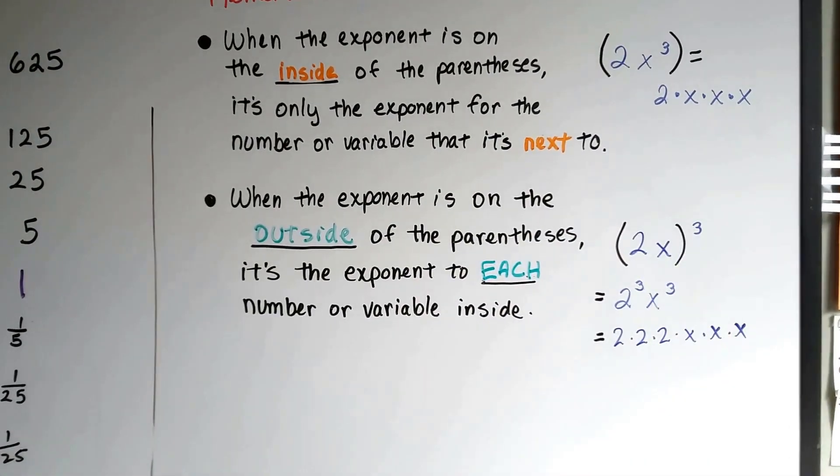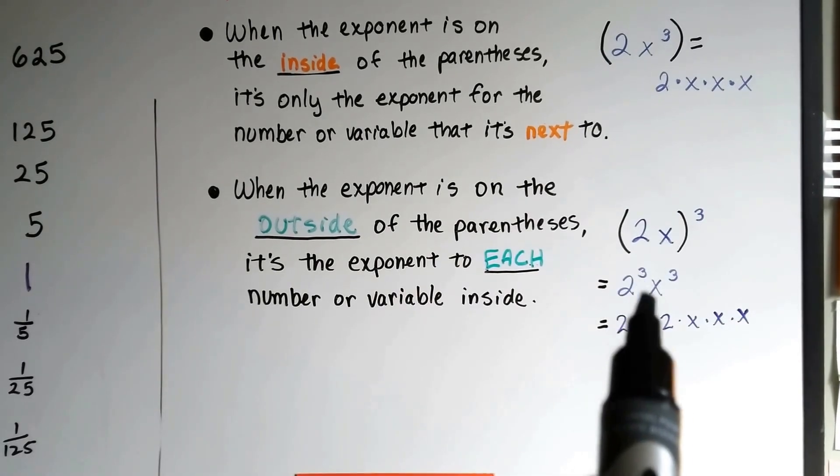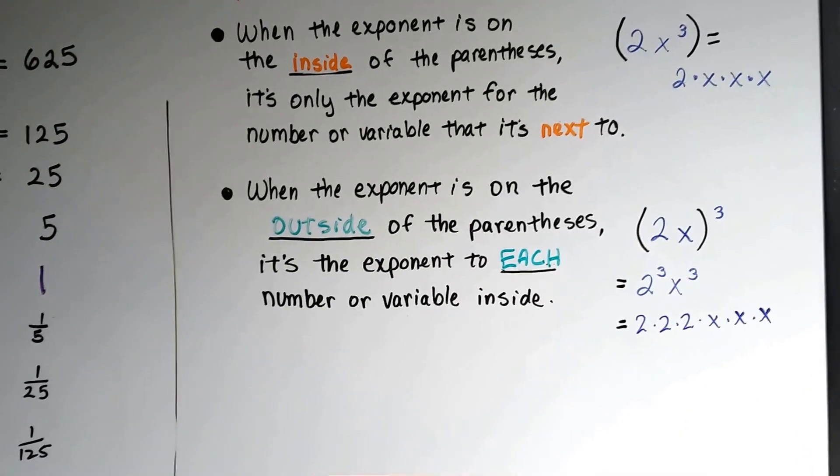It's when the exponent is on the outside is when it gets distributed to both of them. Then you get 2 to the third power x to the third power, which would equal 2 times 2 times 2 times x times x times x.